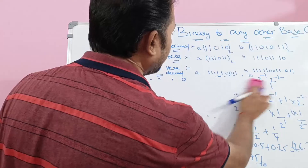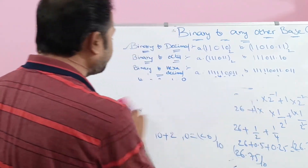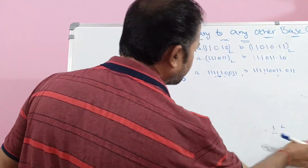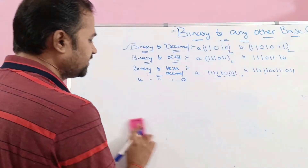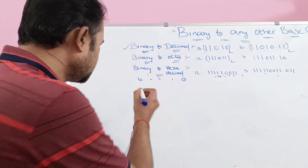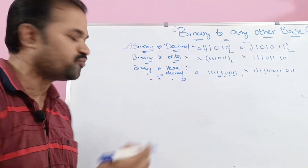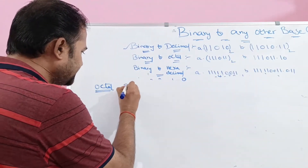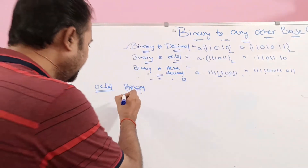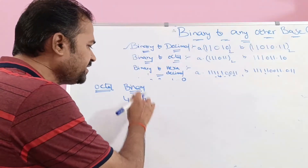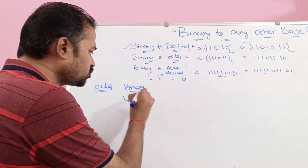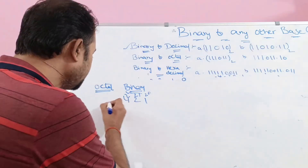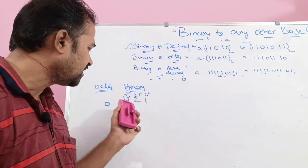Now let us see binary to octal conversion. Binary contains 2 symbols — 0 and 1 — while octal contains 8 symbols from 0 to 7. For octal, we use a 4-2-1 notation, where 1 = 2⁰, 2 = 2¹, and 4 = 2².